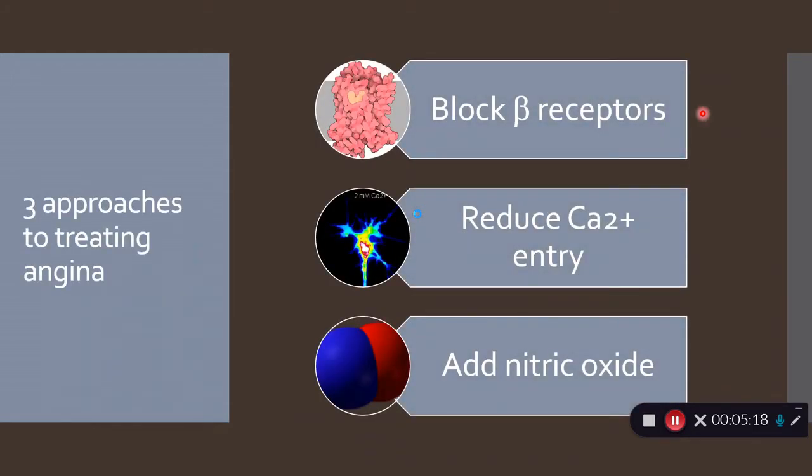Let's have a look at those three ways of treating angina. We can block beta receptors, we can try to reduce calcium entry into the heart muscle, or we can add nitric oxide. Let's see what each of those do.